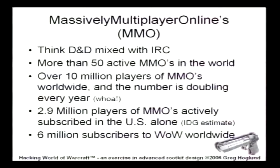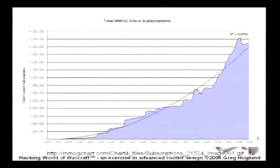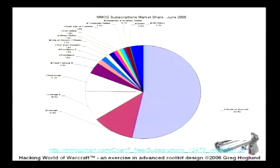The number of MMOs is doubling every two years, tracking Moore's Law. There are over 50 active MMOs right now. IDG estimates about 3 million players in the U.S., though I think that number is a little low. The latest Blizzard box says 6.5 million players of World of Warcraft — that's a lot. Here are statistics showing the number of players rapidly increasing. This chart shows total market share of various MMOs — the big slice is World of Warcraft, and about a quarter of the pie is Lineage and Lineage 2, very popular especially in Asia.